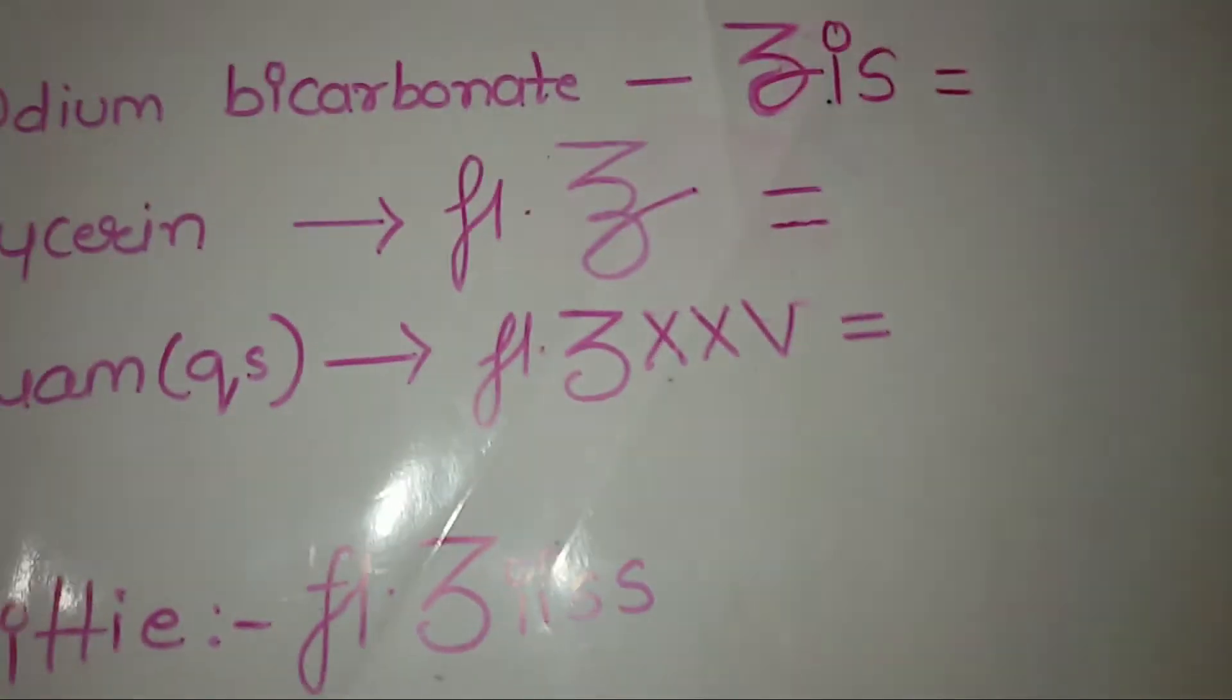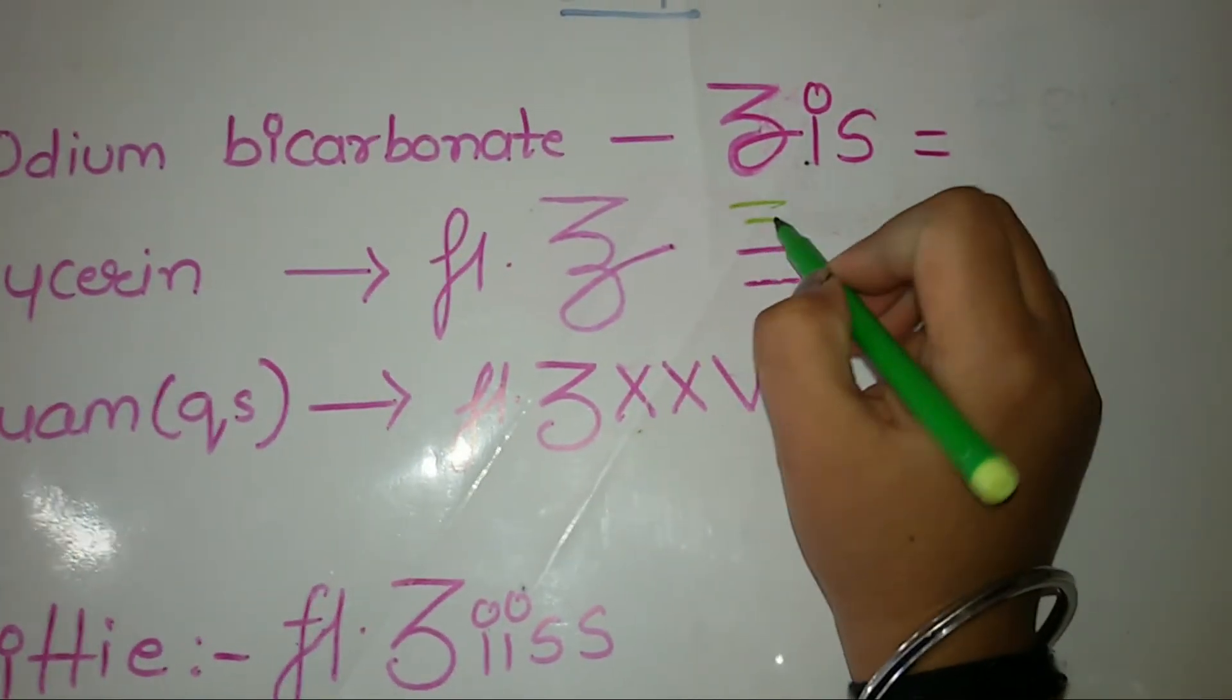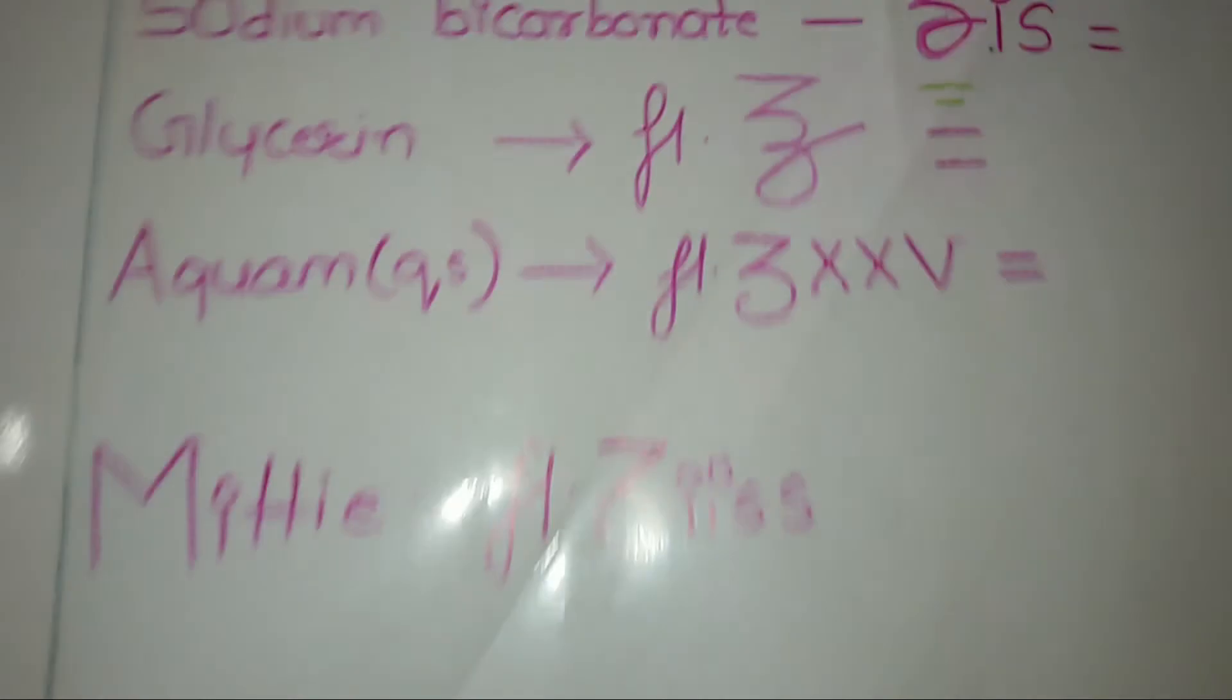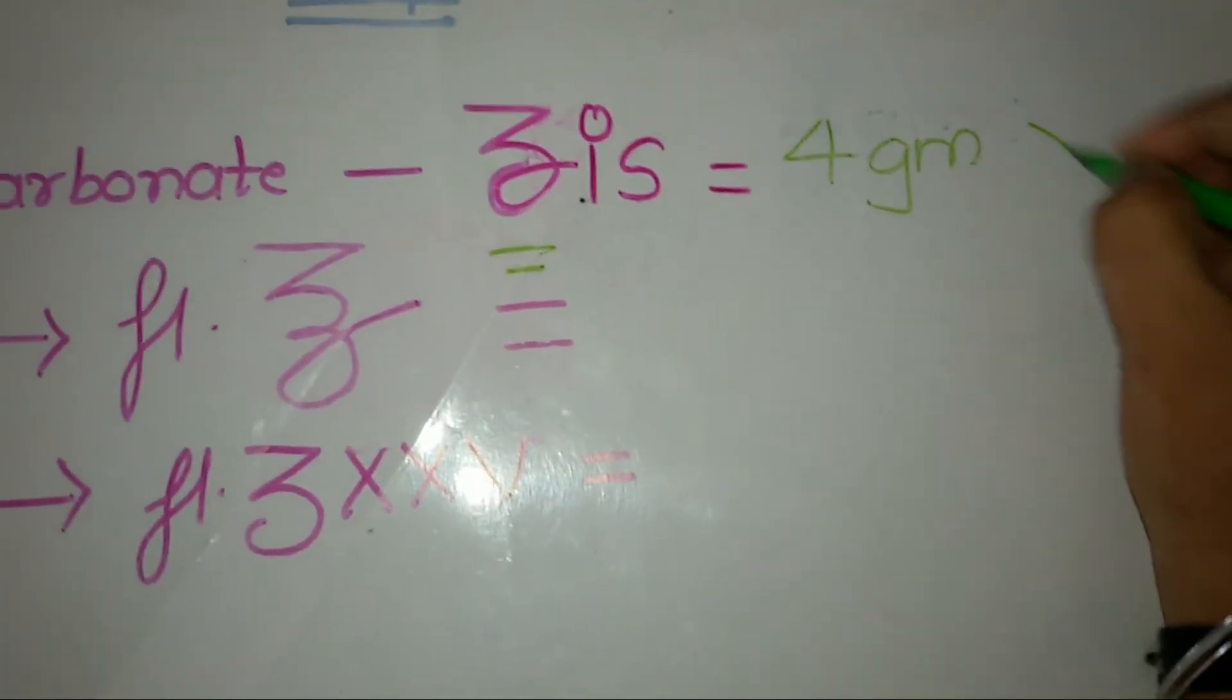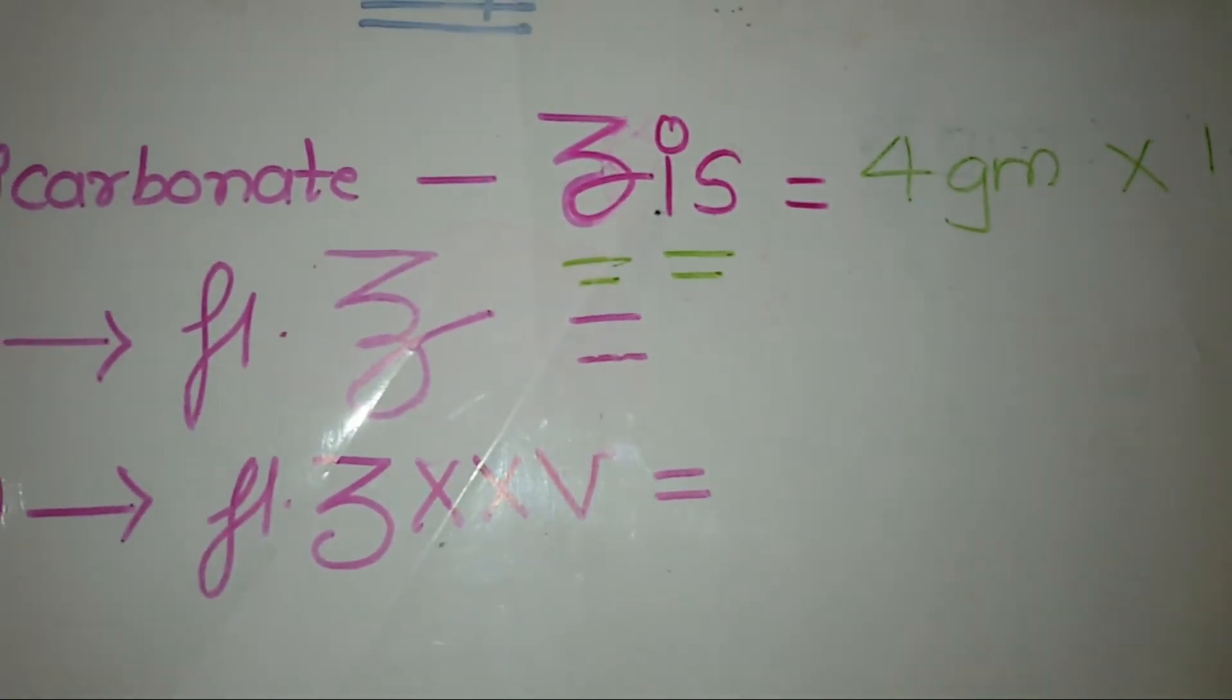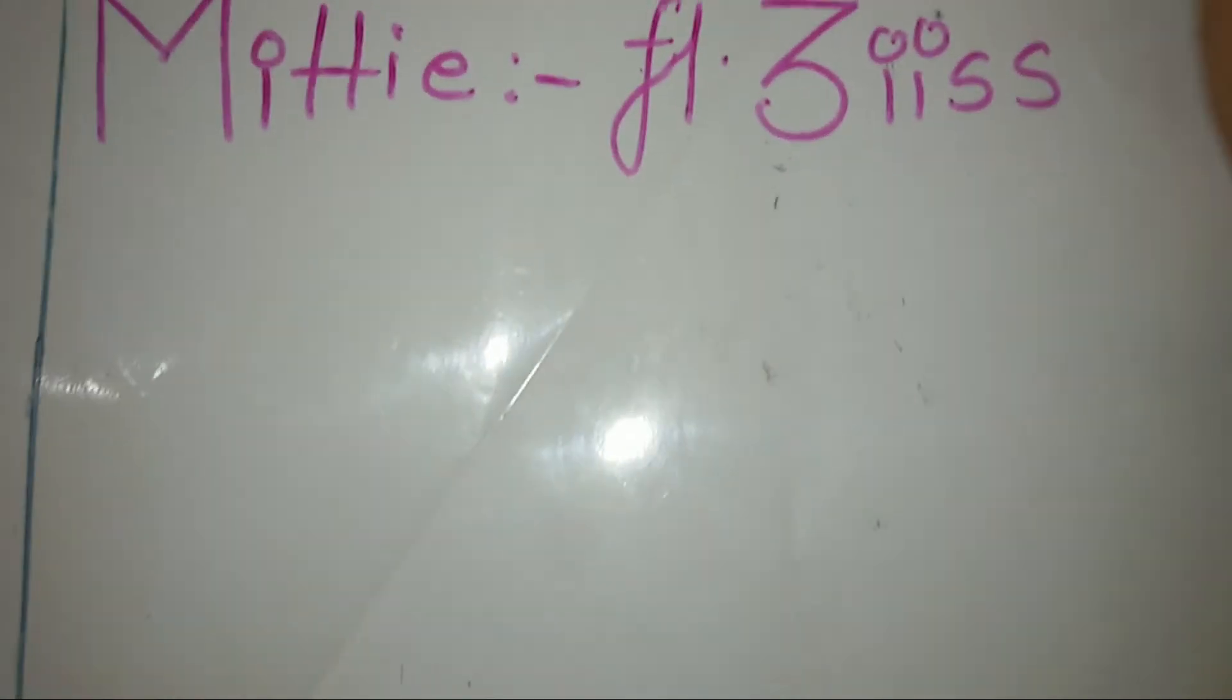Now, how we solve this prescription. This is drachm, so one drachm equals 4 gram. We will write 4 gram into 1S. That means 1.25, because 1S is 1 plus 0.25.